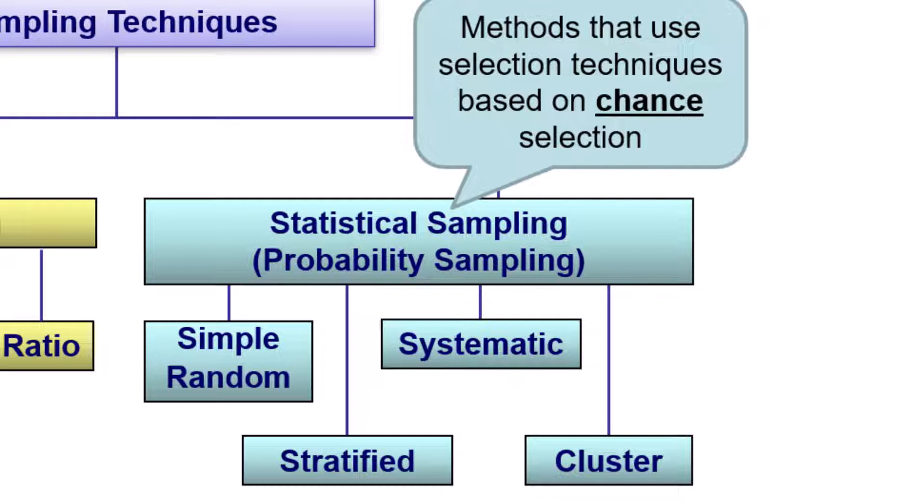These include simple random, systematic, stratified, and cluster sampling. These methods use selection techniques based on chance. This means every item in the population has the same chance of getting picked. Statistical sampling is more commonly used in practice compared to non-statistical sampling, but this also can depend on the situation. Let's take a deeper look at some of the statistical sampling methods.